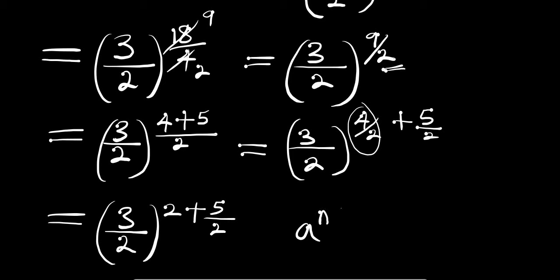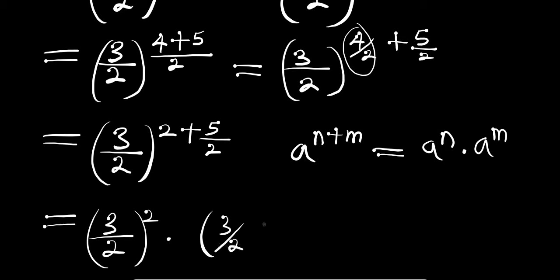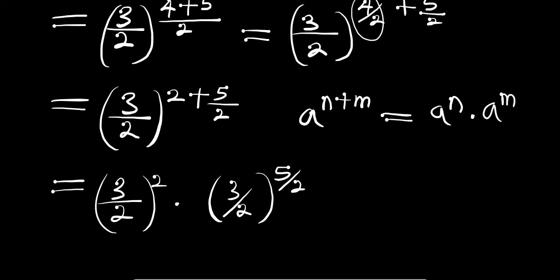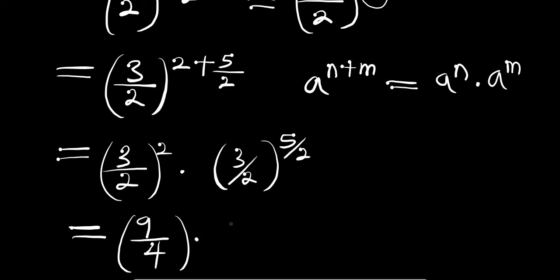Now consider this identity: if you have a to the power of n plus m, this equals a to the power of n times a to the power of m. So we apply this and we get 3 divided by 2 to the power of 2, times 3 divided by 2 all to the power of 5 divided by 2. That means we are going to have 3 power 2 which is 9 divided by 4, and this will multiply 3 divided by 2 all to the power of 5 over 2.